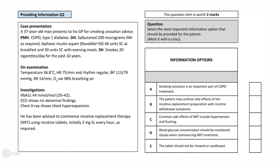A 37-year-old man presents to his GP for smoking cessation advice. He has a recent diagnosis of COPD and a history of type 1 diabetes mellitus. He takes salbutamol and insulin. He has been smoking for 10 years and smokes 20 cigarettes per day, which equates to 10 pack years. All examination findings are normal. Investigations reveal a raised HbA1c. His ECG shows sinus rhythm and his chest X-ray shows lung hyperinflation. He has been advised to commence nicotine replacement therapy using sublingual tablets, two tablets every hour, continued for three months. The question asks you to select the most appropriate option that should be communicated to the patient.